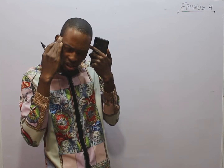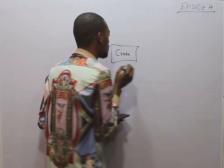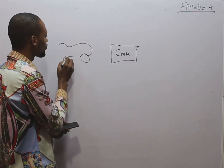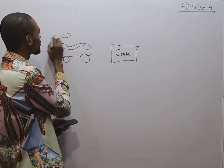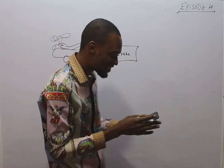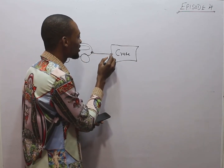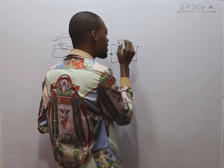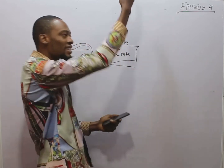Take g to be 10 meters per second squared. Let me analyze the question. We have a crate here, and there is an engine — let's say a bike — that drags this crate. There is a connection between them. The crate itself has a mass of 50 kg.